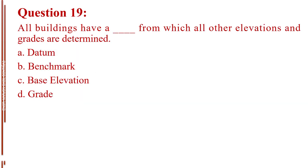Question number 19. All buildings have a blank from which all other elevations and grades are determined. Letter A, datum. Letter B, benchmark. Letter C, base elevation. Letter D, grade. The answer is Letter C, base elevation.